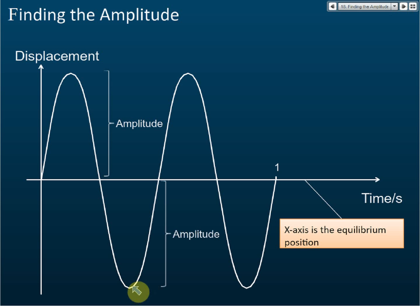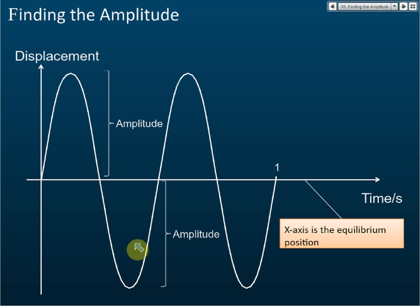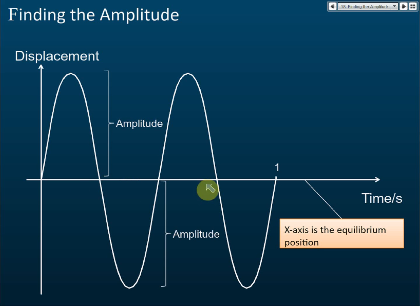The minimum point is also considered the maximum displacement from the equilibrium position, so it is also the amplitude. That is how we find amplitude from a displacement-time graph — we use either the maximum point or the minimum point from the equilibrium position, and that is the amplitude.